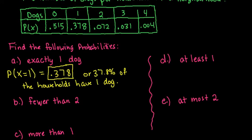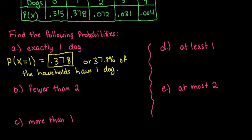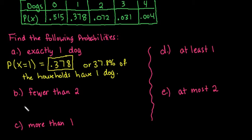For the second one, for fewer than 2, we're looking for the probability that X is less than 2. Fewer than 2 does not include 2, so that means it's either the probability of 0 or the probability of 1.